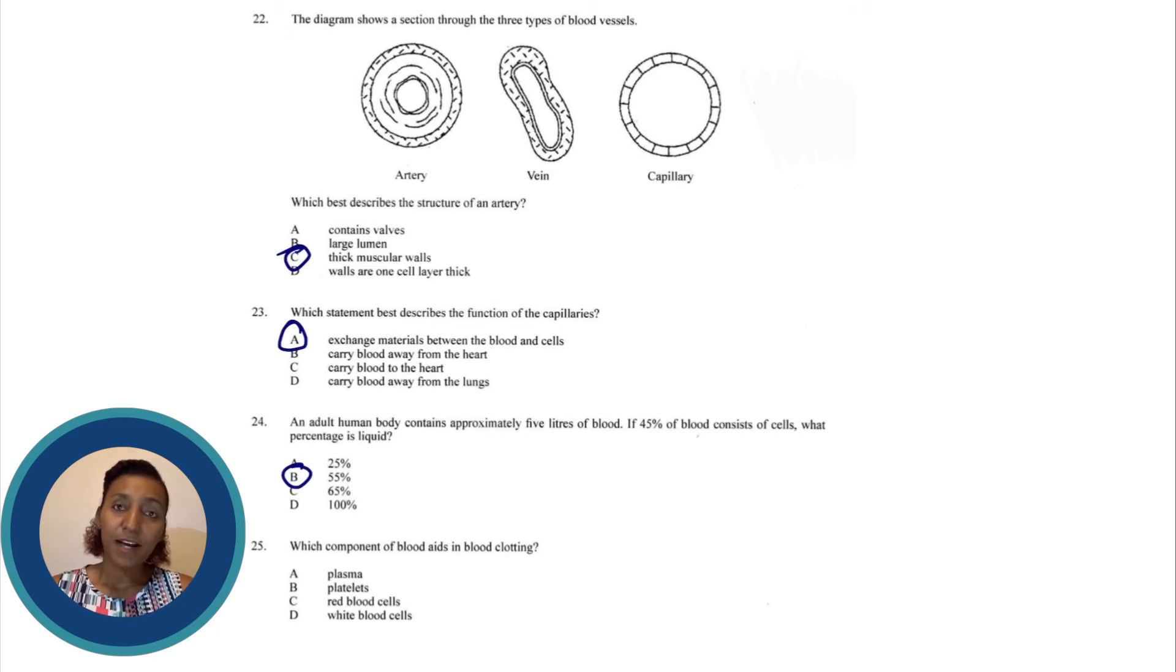Number 25 says which component of blood aids in blood clotting? The options given are plasma, platelets, red blood cells, and white blood cells.